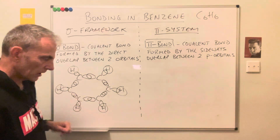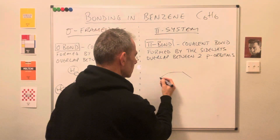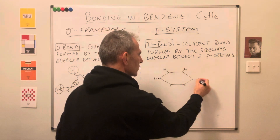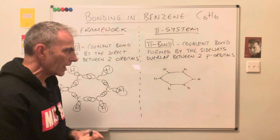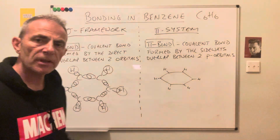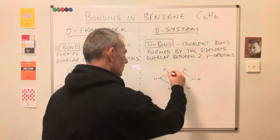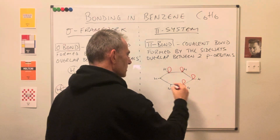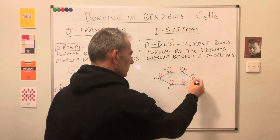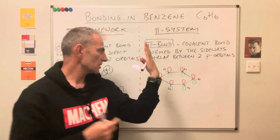Now let's move over to the pi system. Rather than redraw everything, I'll draw this flattened hexagon as my sigma framework and put the hydrogens on as well. We've only dealt with three of those four electrons, so where is the fourth electron on each carbon? It's sitting in a p orbital. A p orbital is a region of space that looks like this — it has an upper lobe and a lower lobe. I'll draw the upper lobes on each carbon's p orbital in red and the lower lobes in green.